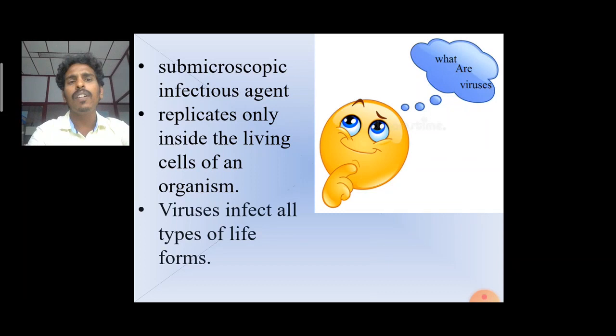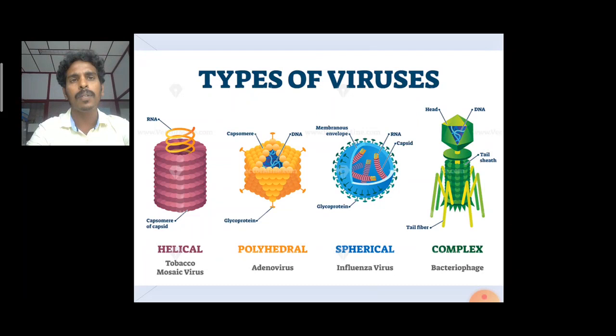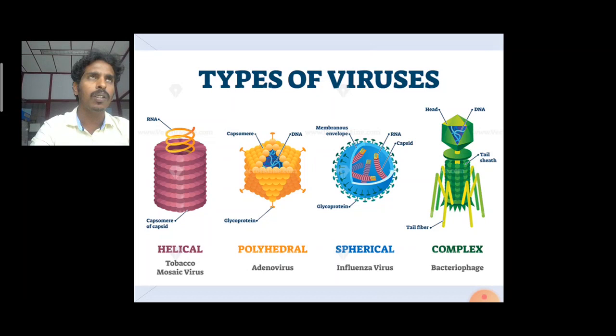There are four different types of viruses presented in the world. Number one is helical, number two is polyhedral, number three is spherical structure, and number four is complex structure. Helical structure is a good example for tobacco mosaic virus. Polyhedral is a good example for adenovirus, spherical for influenza viruses, and complex is a very good example for bacteriophages.